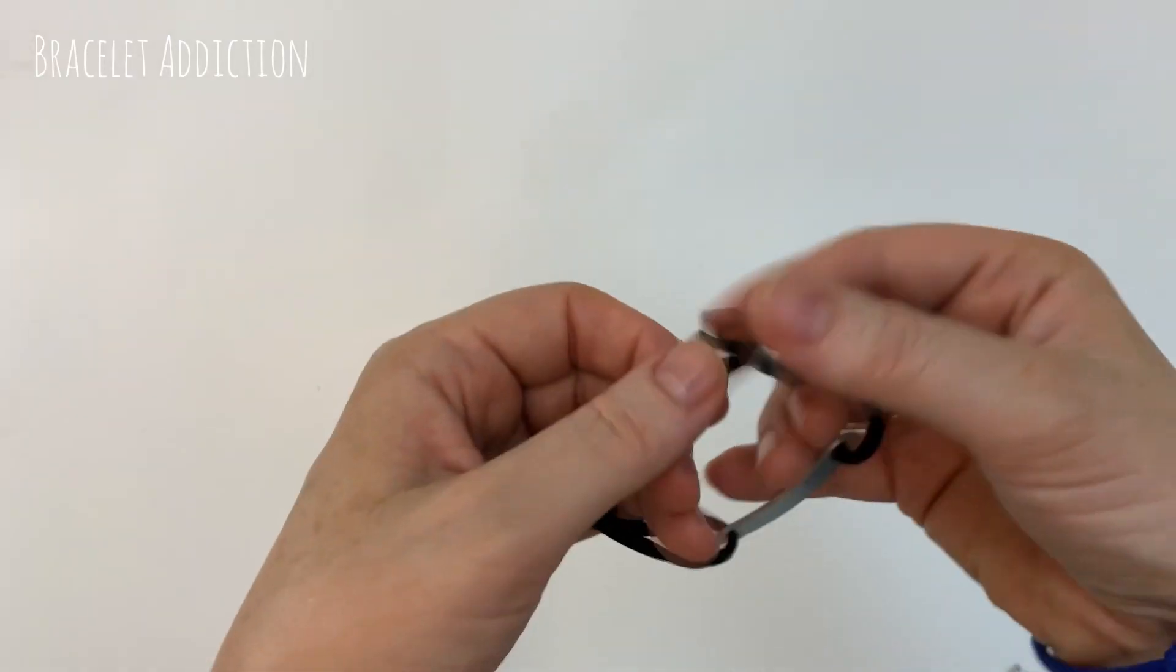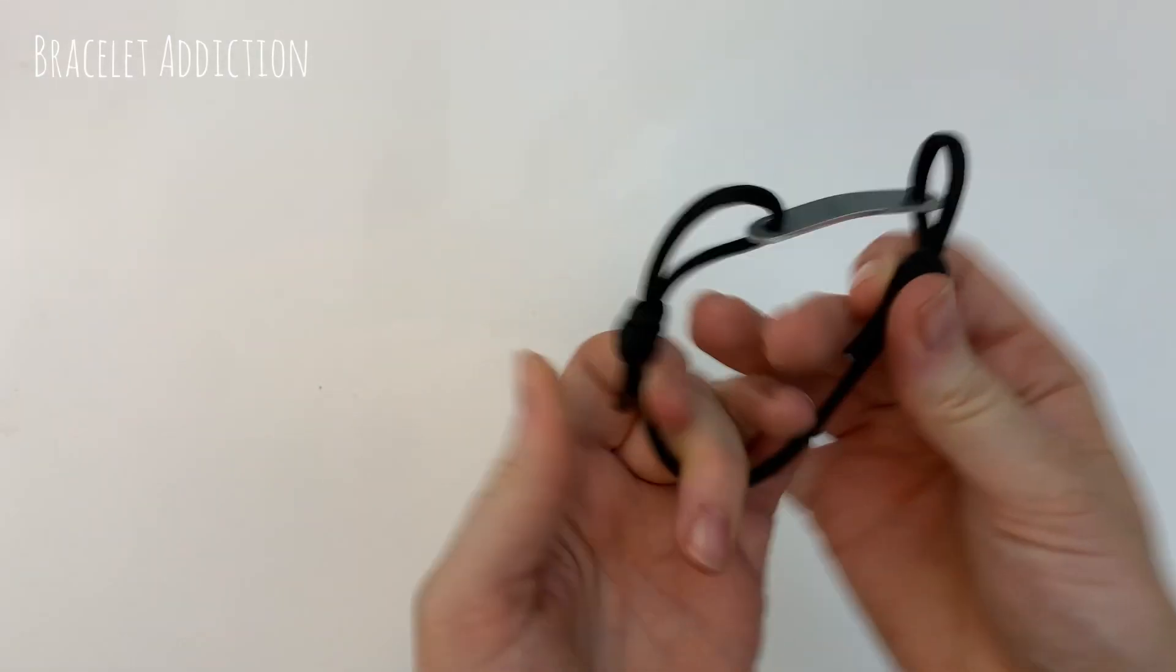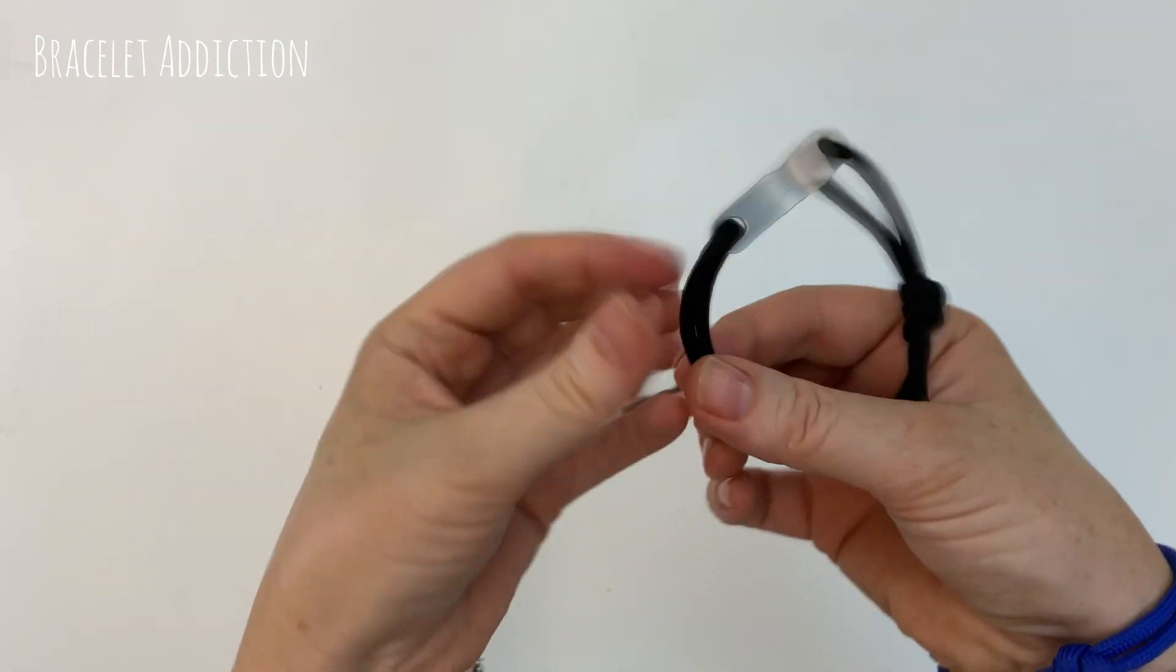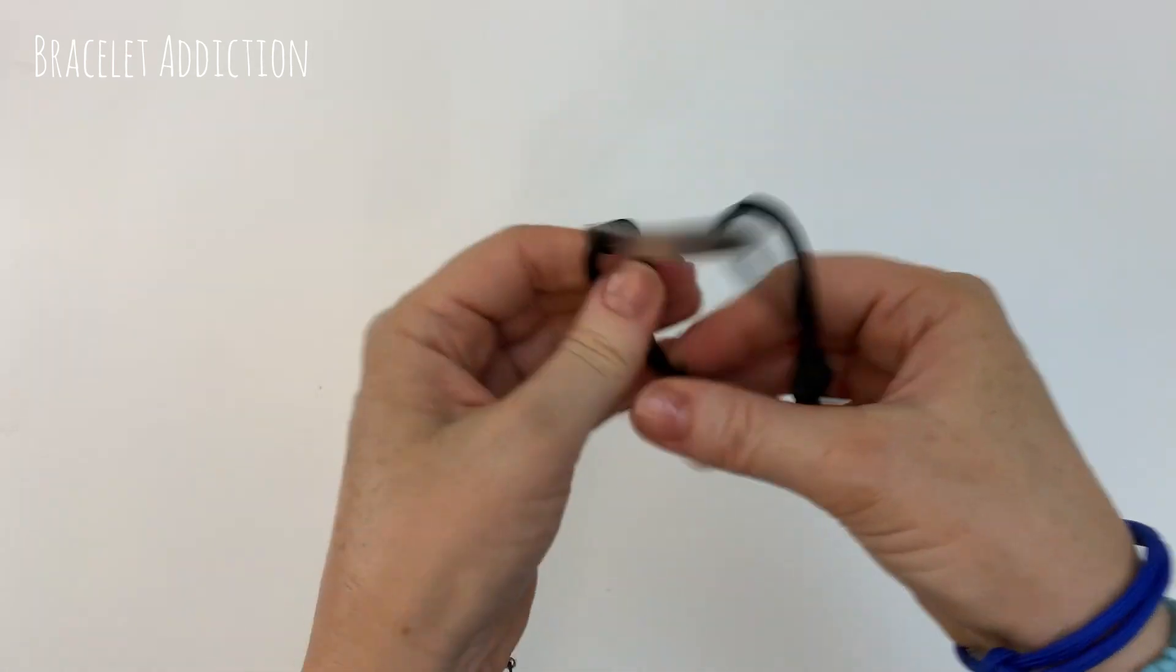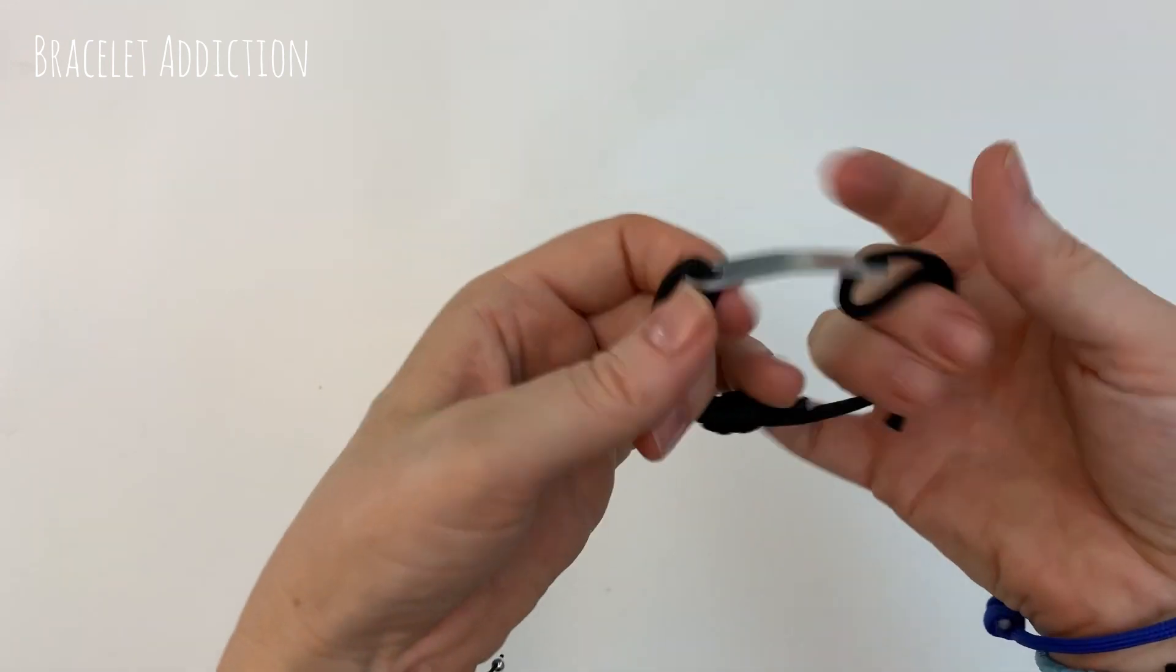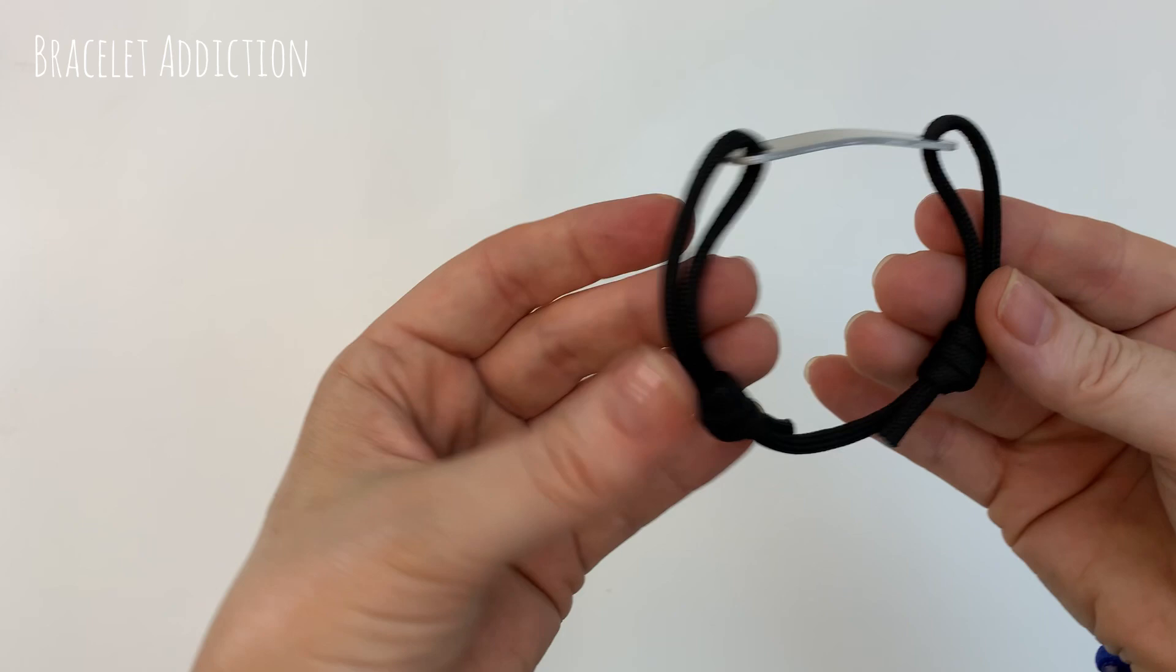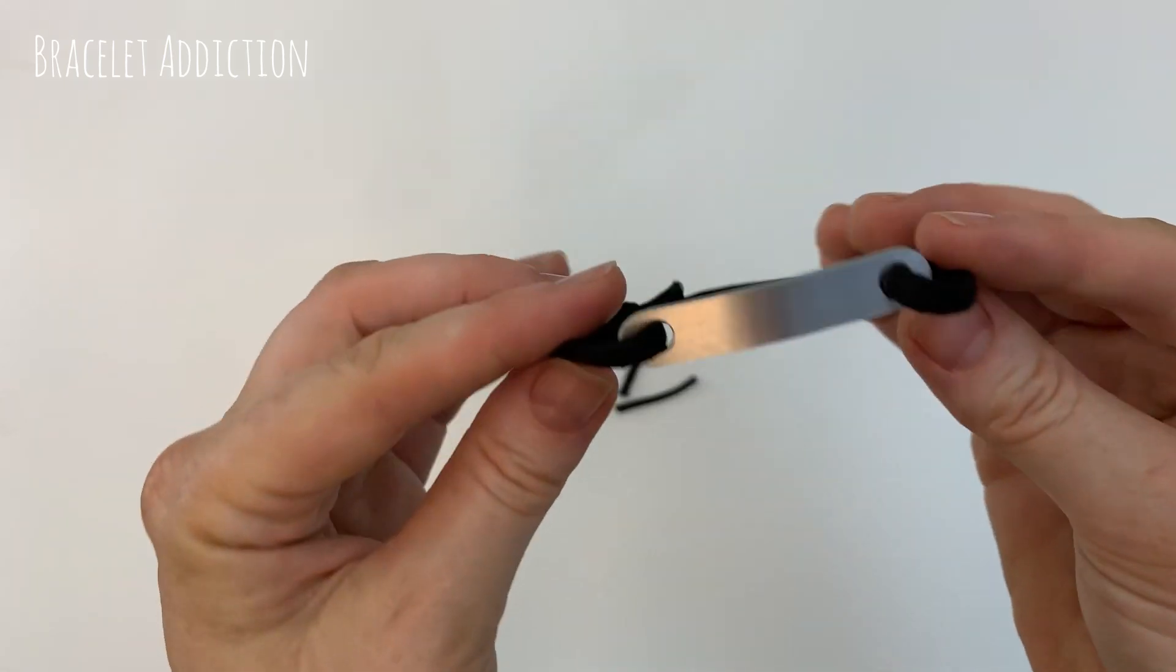Hey guys, welcome back. In this video we're making a bar or plate bracelet. It has two adjustable knots that slide along each side and the metal bar with a hole on each side sits in the center. These bracelets are often made with a shoelace or paracord.